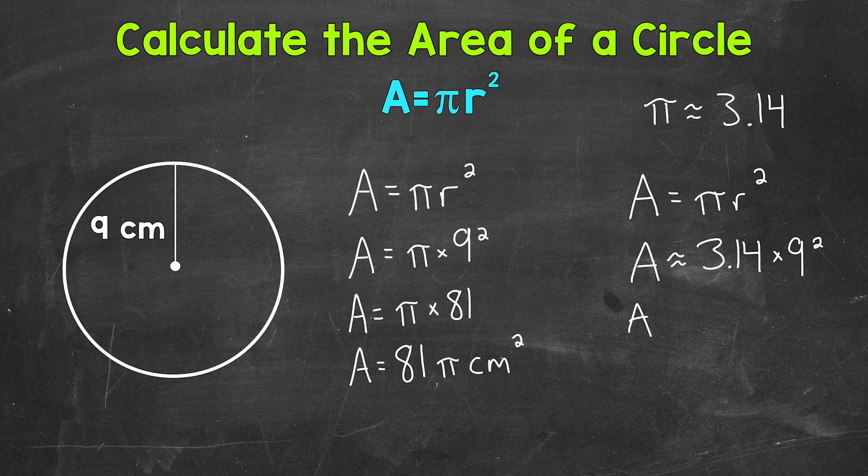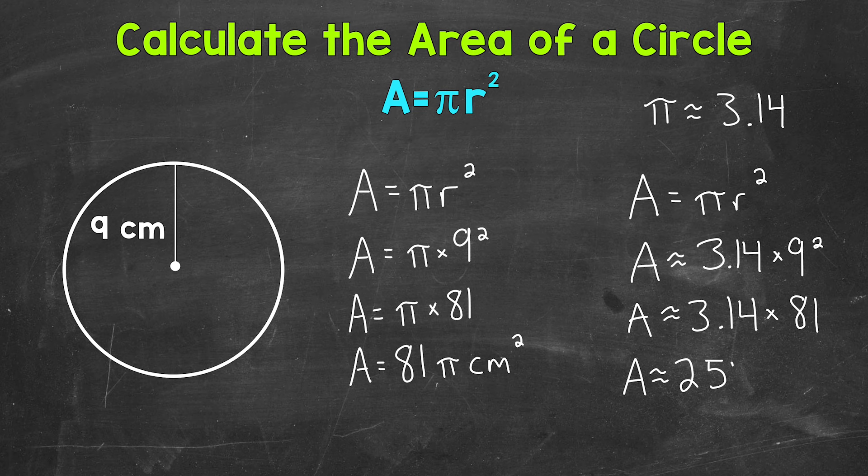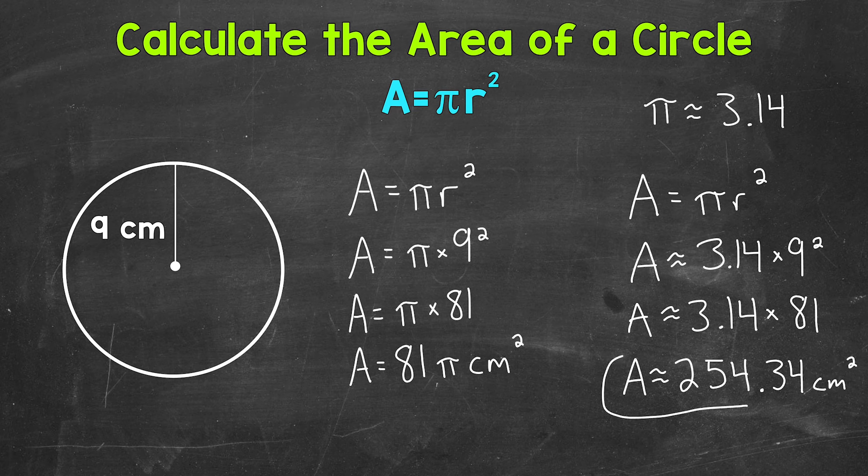So 9 squared is going to give us, well, we have 3.14 and 9 squared equals 81. So we end up with 3.14 times 81. And that's going to give us an approximate area of 254.34 square centimeters.